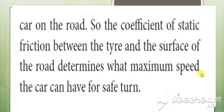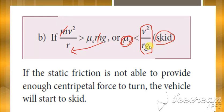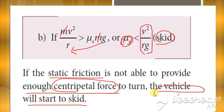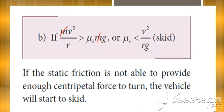The second condition is the greater than case: mv²/r > μₛmg. Canceling m from both sides and bringing g down, we get μₛ < v²/rg. Whenever the coefficient of friction is less than v²/rg, there is a condition for skidding. Static friction is not able to provide the necessary centripetal force. The centripetal force comes from friction between the tyre and the road — when that friction is insufficient, the vehicle will start to skid. This condition, μₛ < v²/rg, is the necessary condition for skidding.